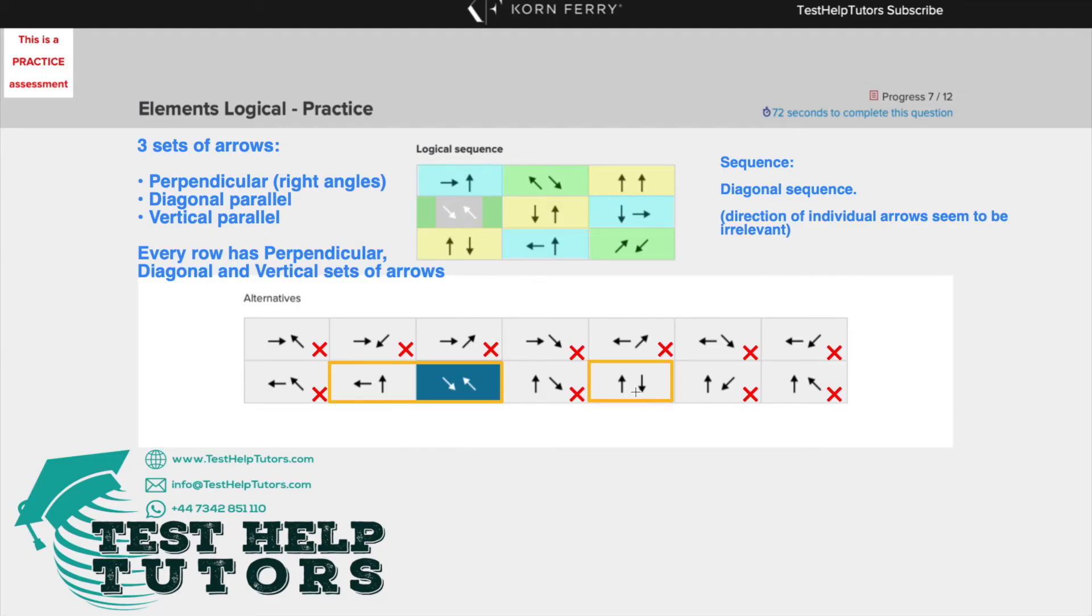Secondly, in order to solve this problem, we need to realize that every row has either a perpendicular, diagonal, or vertical set of arrows. So here we've got a perpendicular, diagonal, vertical.